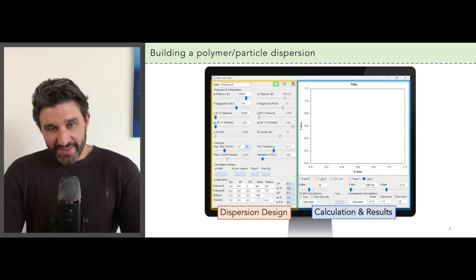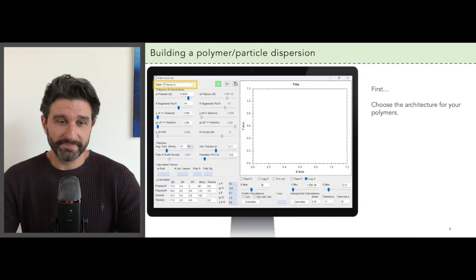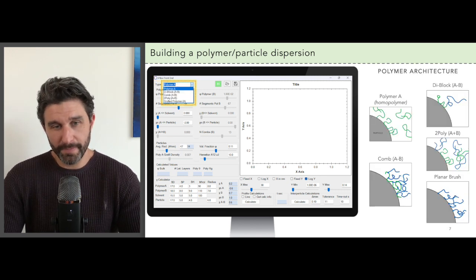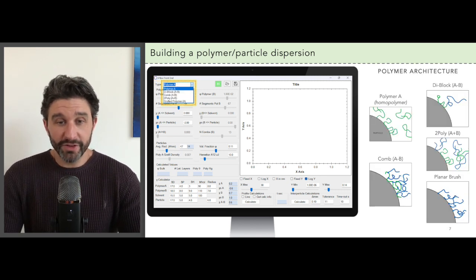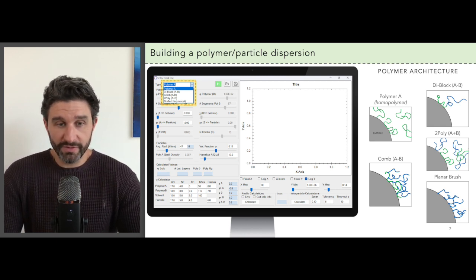All right, so let's walk through how you design a dispersion formulation. First step is you choose an architecture for your polymers. HSP-IP offers a number of architectures that we've discussed in the previous episodes of this webinar.